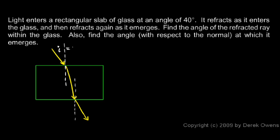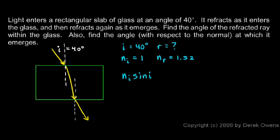We'll do one refraction at a time, starting where the light ray enters the glass. We know that I equals 40 degrees, and R is what we're looking for. n_I is the index of refraction where the incident ray is — that's in air, so n_I is 1. n_R is the index of refraction where the refracted ray is — that's in glass, so n_R is 1.52.